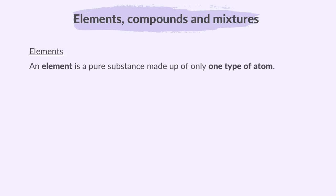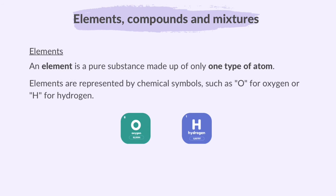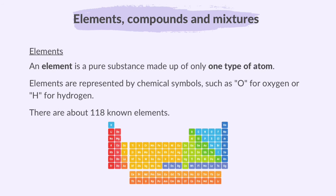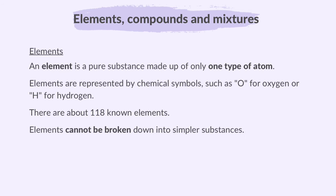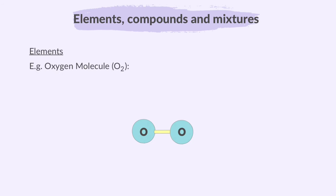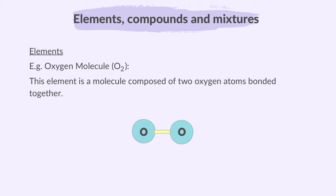An element is a pure substance made up of only one type of atom. It's the simplest form of matter. Elements are represented by chemical symbols such as O for Oxygen or H for Hydrogen. There are about 118 known elements, each with its unique properties. Elements cannot be broken down into simpler substances. An Oxygen molecule, O2, is an example of an element — a molecule composed of two oxygen atoms bonded together, so the element Oxygen consists of only oxygen atoms.